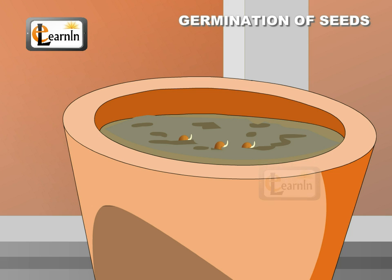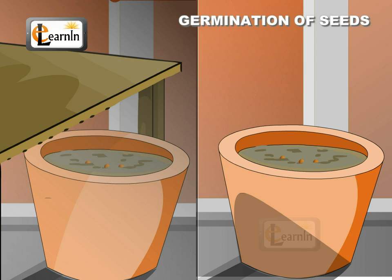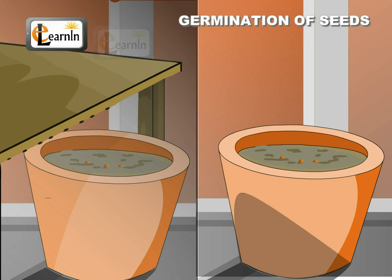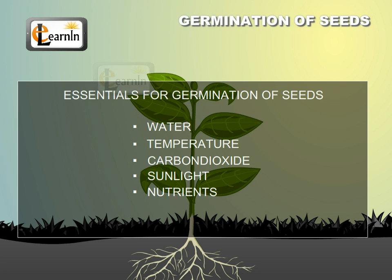We provided all the conditions like water, temperature and carbon dioxide for the seeds to germinate. Had we not watered the pot, it would have never germinated. Or if we had kept it under the table, it would not have germinated due to the lack of sunlight. Hence, all these are the ideal conditions which are important for the germination of seeds.